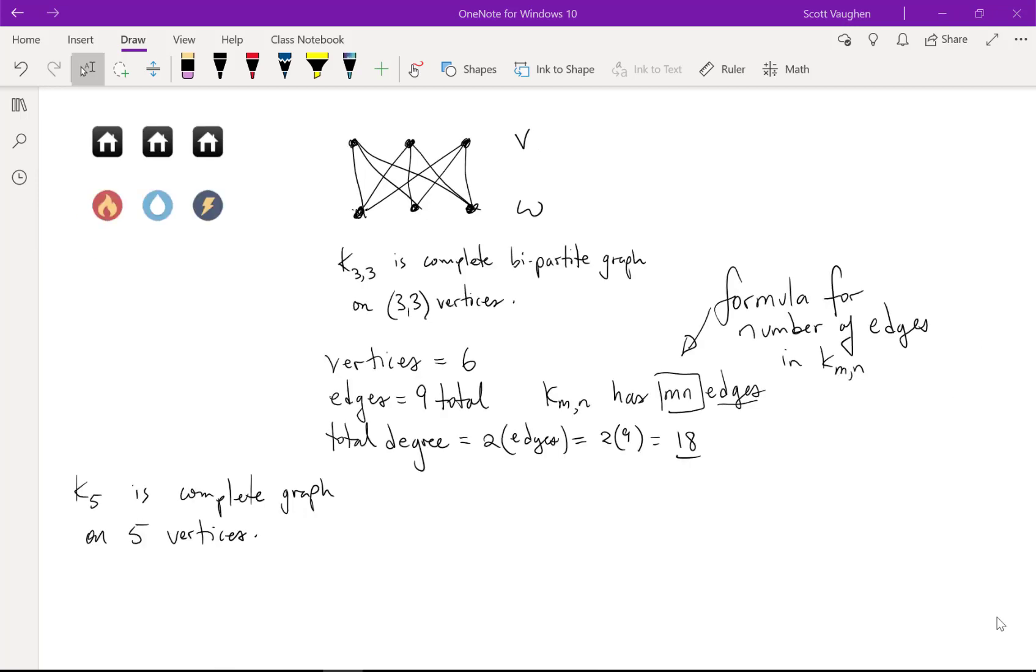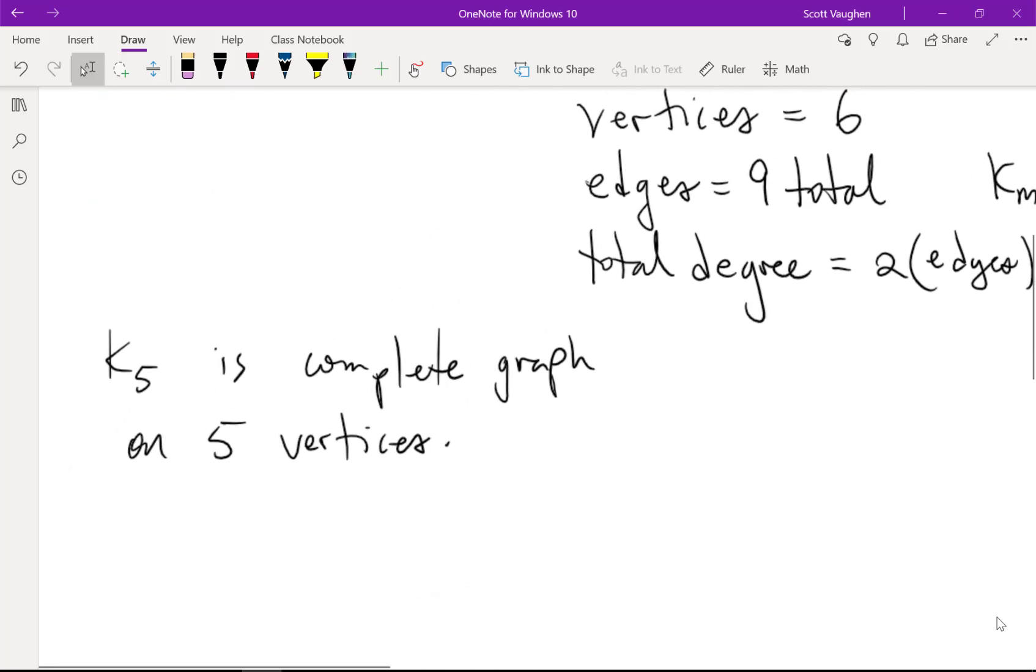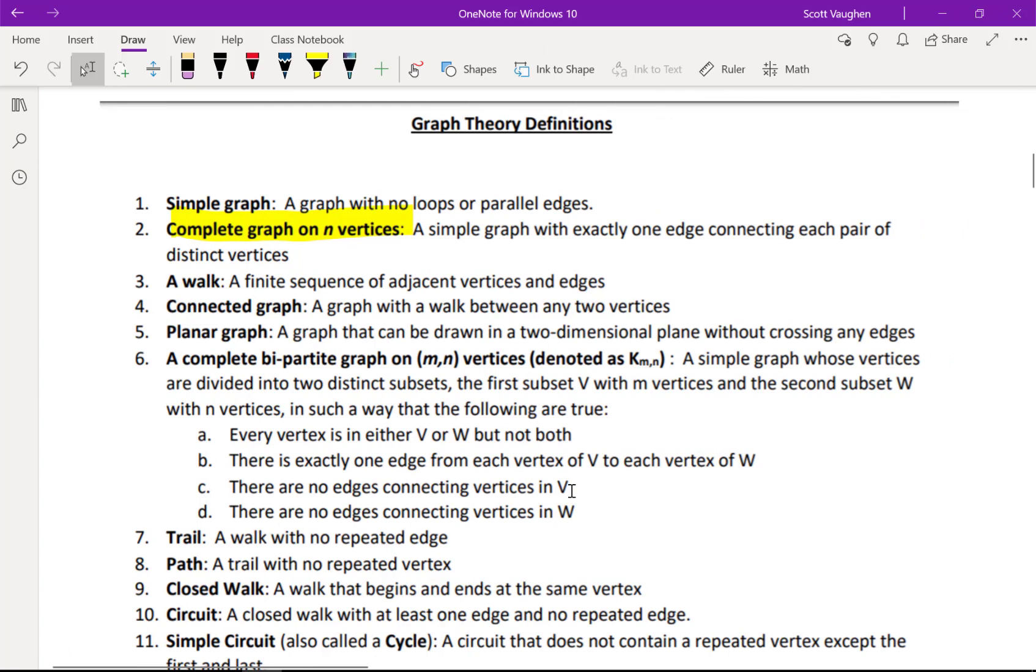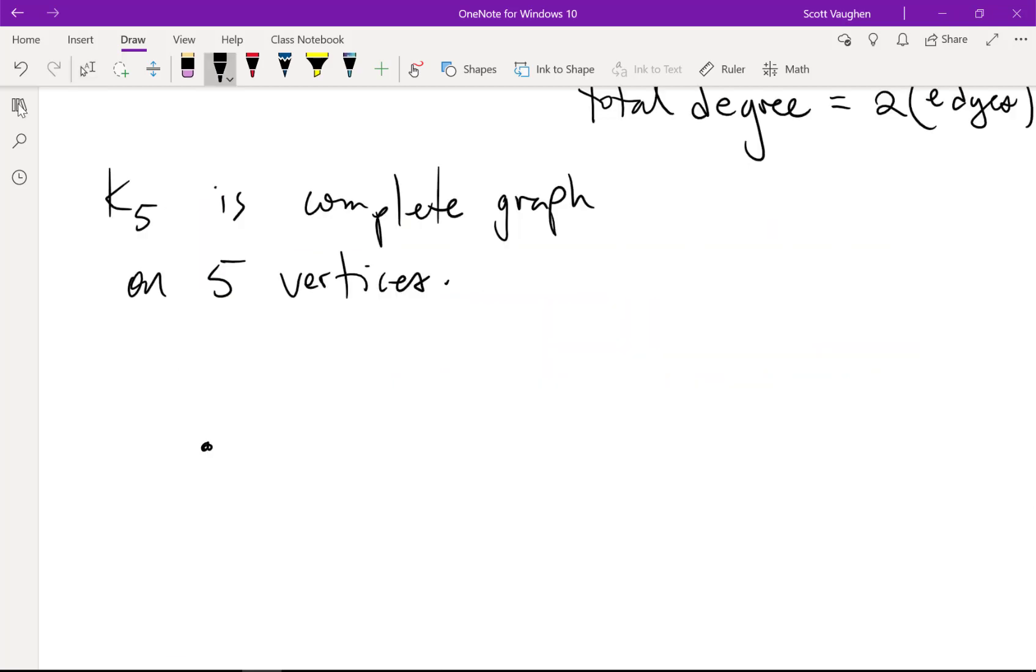Well, just so I can delay giving the answer to the utility puzzle a little bit longer, let me just switch to a different graph. It's K5, which is the complete graph on five vertices. What was that? What's a complete graph? A complete graph is a simple graph with exactly one edge connecting each pair of distinct vertices.